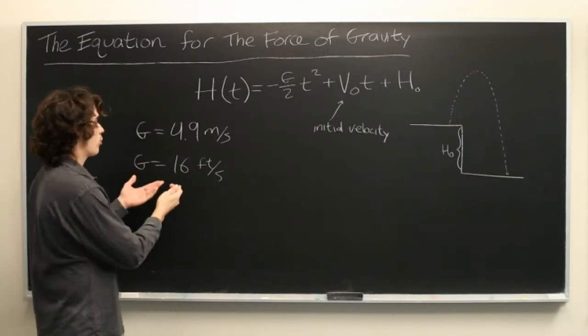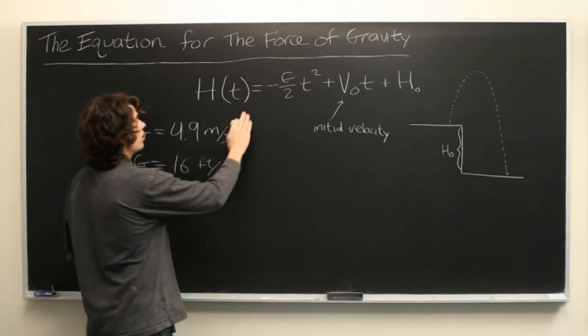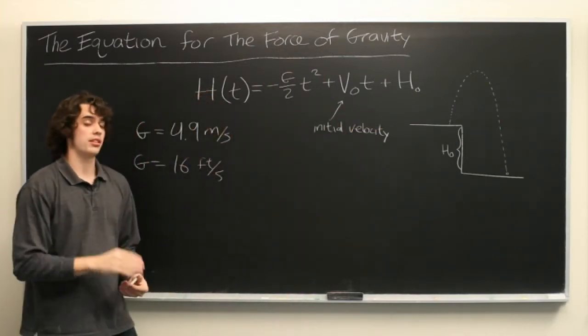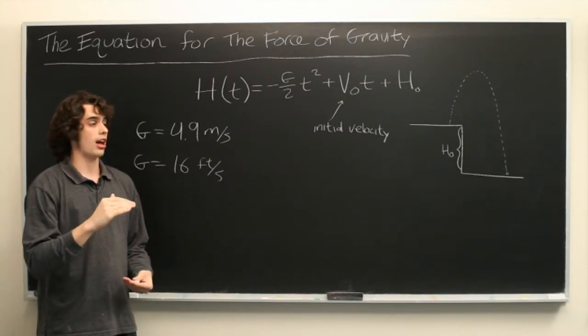Depending on whichever units you're using, you just plug in this value of g into our equation, and then you can use that to solve for the exact height of an object depending on the time since it was tossed.